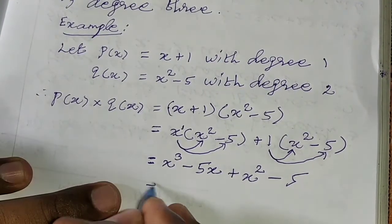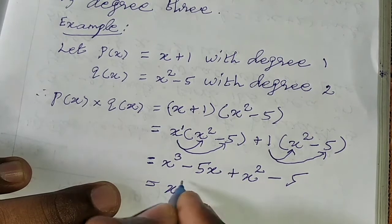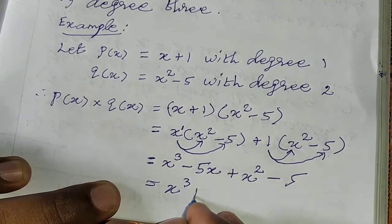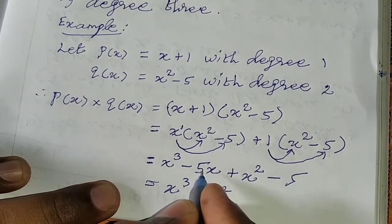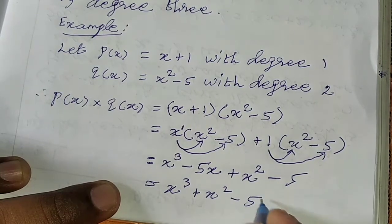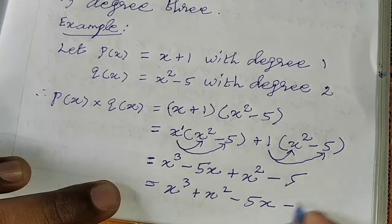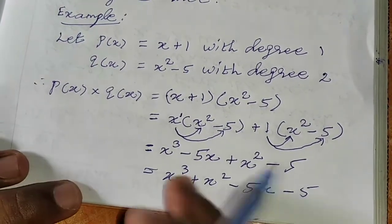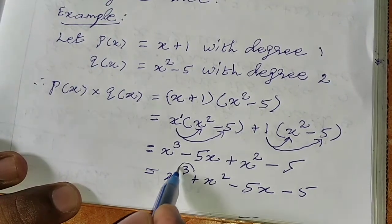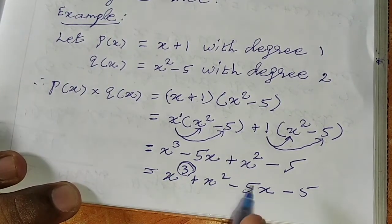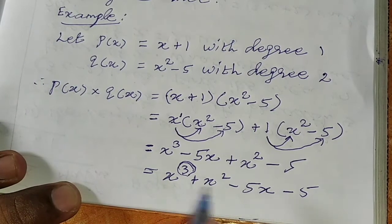First, cube term is 1, square term is 1, x term is 1. Now, what is the degree? Highest power 3. What is a cubic polynomial? Degree 3.